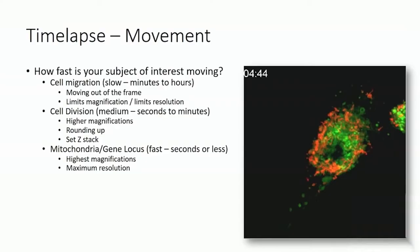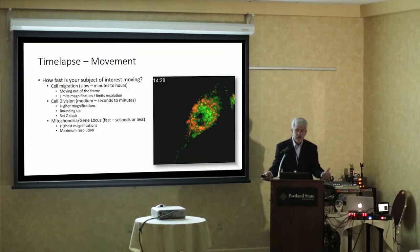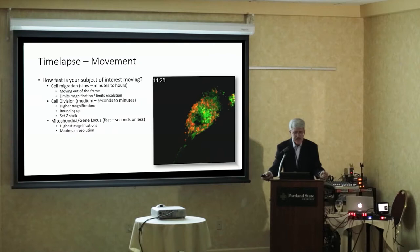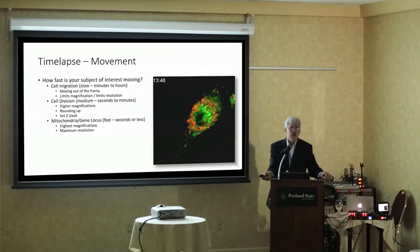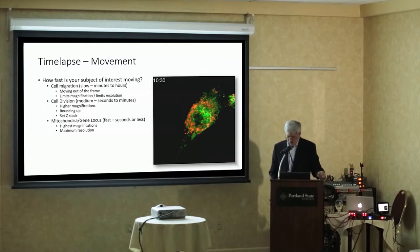Things are moving — those are mitochondria. When talking about your area of interest and how fast it's moving, you can look at it in three ways: slow things that take place over minutes or hours; medium things like cell division, which you might want to see in seconds to minutes; or fast things like mitochondria or gene loci, which you have to look at in seconds or less. The mitochondria shown here are imaged every two seconds for 15 minutes — they move like little wiggly worms, amazingly quickly.